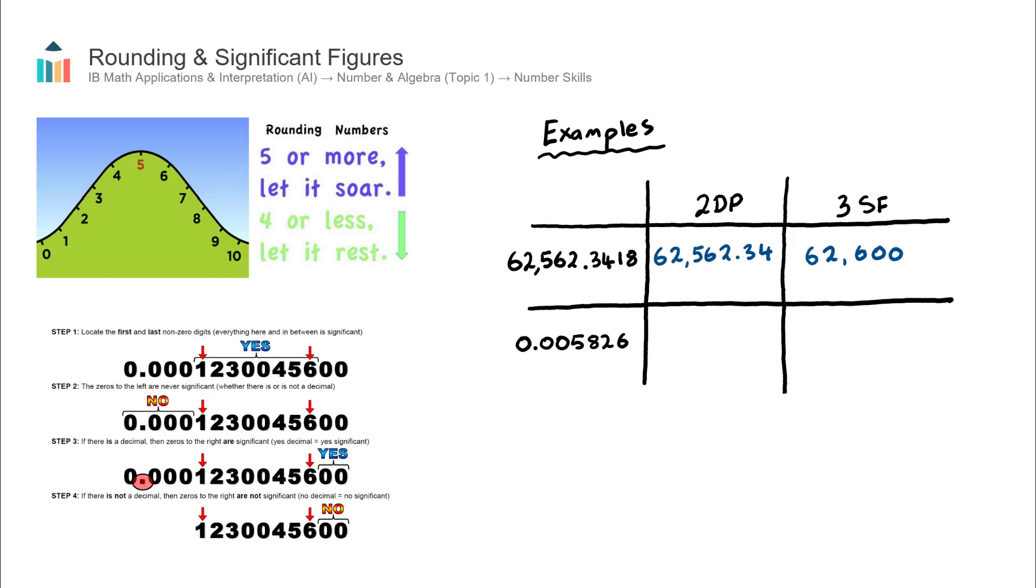That's the first number complete. Let's now try the second number, which is a much smaller number. This is 0.005826. Let's firstly round this to two decimal places. Well, this is the first decimal place, this is the second, so I want to chop the number off here. I need to consider the number to the right of the blue line, that is 5, it is a big number, so therefore the 0, the number to the left of the blue line, will round up by 1. So this becomes 0.01.